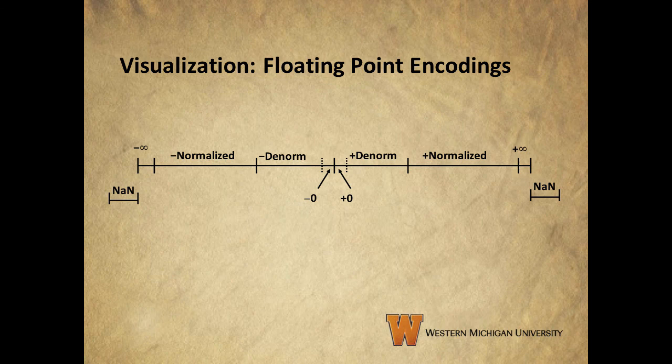And we'll finish up this video with a simple graphical representation of what these ranges look like on a number line. We have our zeros at the middle. Remember, they have positive and negative 0. Surrounded by denormalized values, which, remember we said, are the values closest to 0. Then, normalized numbers bounded by positive and negative infinity. And finally, our special case not-a-numbers are outside of our actual number line.